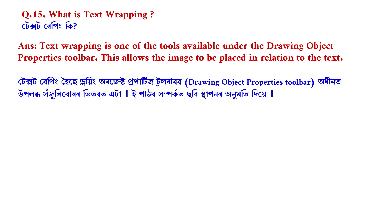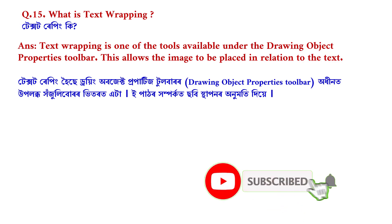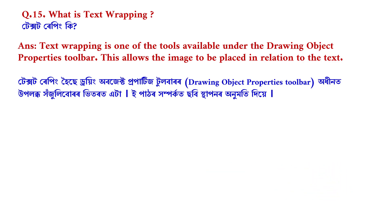What is text wrapping? Text wrapping is one of the tools available under the drawing object properties toolbar. This allows the image to be placed in relation to the text.